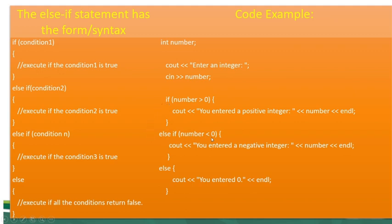Titignan niya ulit kung ano yung magiging status o equivalent niya sa condition. Negative 3 ba is lesser than 0? True. So, sasabihin niya dito: 'you entered a negative integer.' Let's say ang in-input nating value ay 0. Si 0 ba is greater than 0? False. Ibig sabihin, bababa siya kay else if. Si 0 ba is lesser than 0? False pa din. Dahil nag-false na yung dalawang condition mo, automatic gagawin na ay yung kay else. Cout: 'you entered 0.'